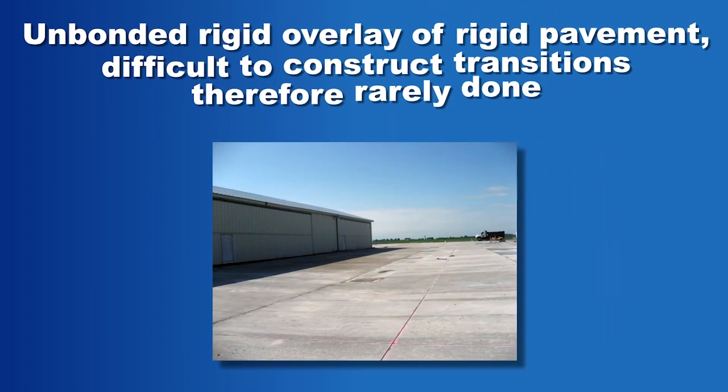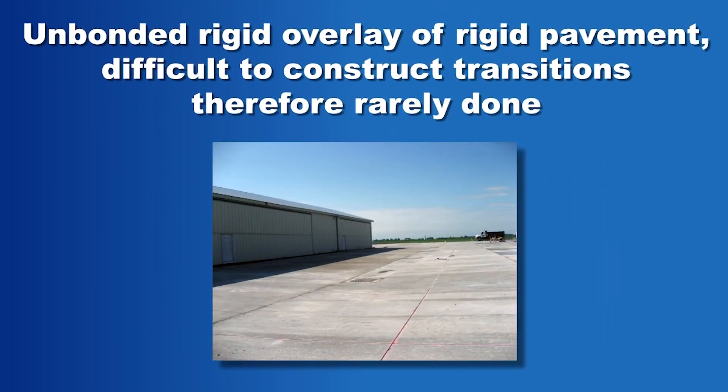FARFIELD has the option for an unbonded rigid overlay; however, it is rarely a feasible option due to the need for accommodating transitions to existing pavements and structures. The structural analysis of an unbonded rigid overlay on a rigid pavement would be similar to the previous example of a rigid overlay on a flexible pavement.